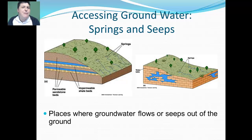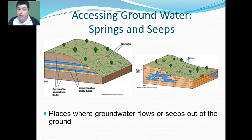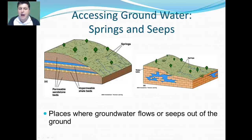So how might we access this groundwater? There are a couple of different ways. Sometimes the groundwater itself actually breaks through and starts coming out from the ground in the form of springs or seeps. The main difference between these two is that springs tend to have a little bit more pressure behind them than just a seep.